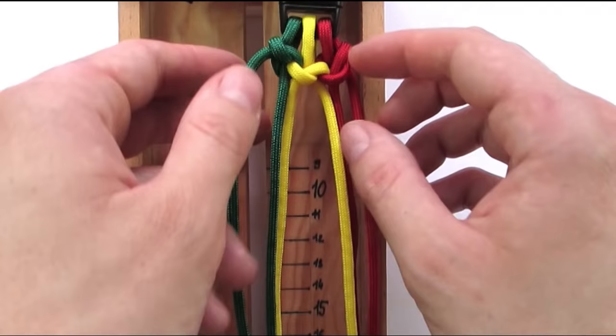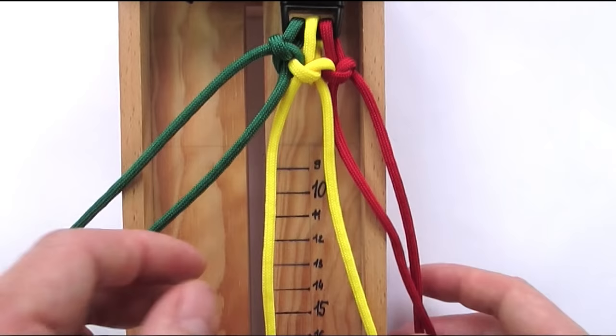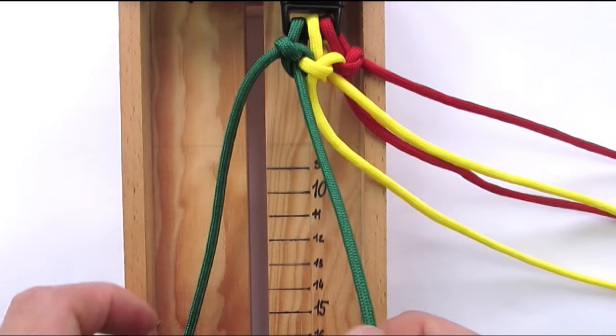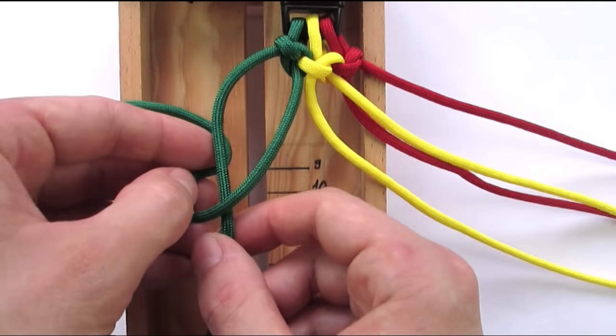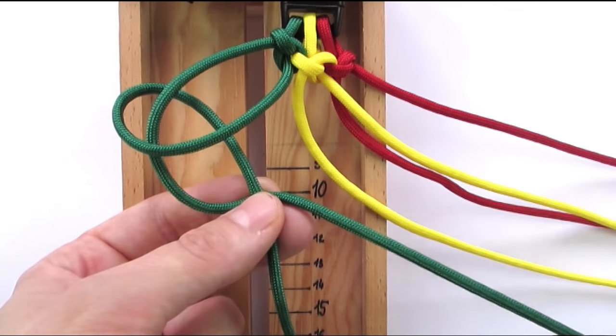Once you have tightened up your first row, it is time to add a second row, which is done exactly the same way. We're going to start with our first color. Take your right end, go over the left end, then under everything towards the right. With your left cord, go under the right, then over everything and into the loop on the left.